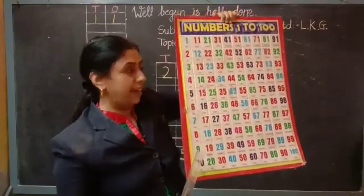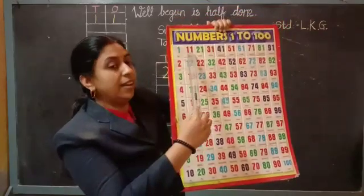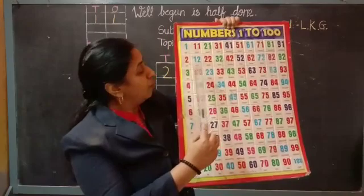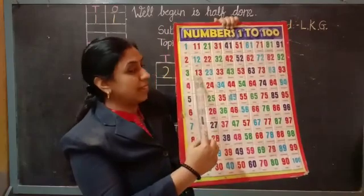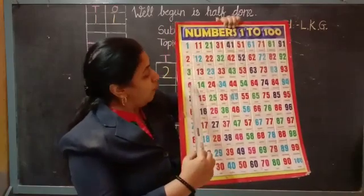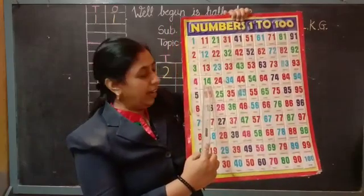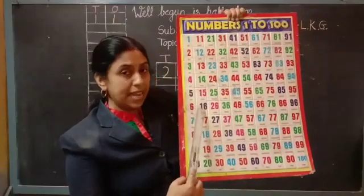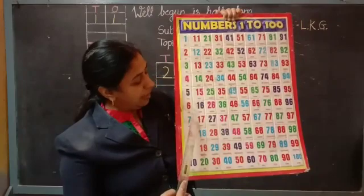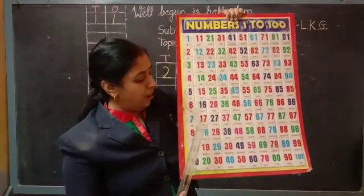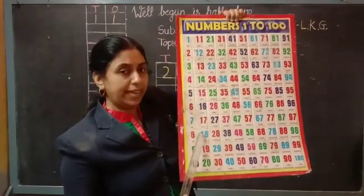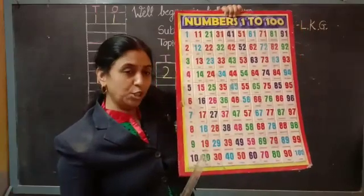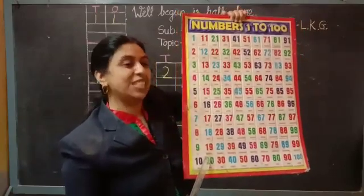1-0, 10. 1-1, 11. 1-2, 12. 1-3, 13. 1-4, 14. 1-5, 15. 1-6, 16. 1-7, 17. 1-8, 18. 1-9, 19. 2-0, yes, 20. Very good.